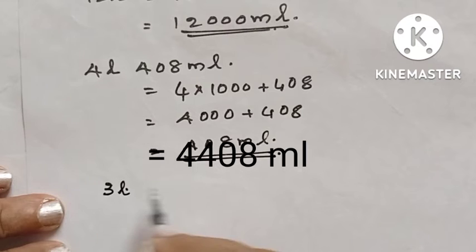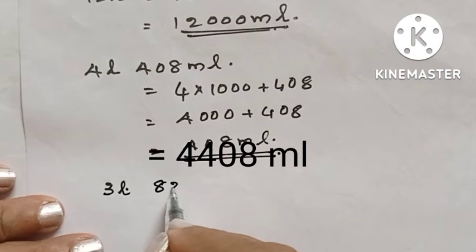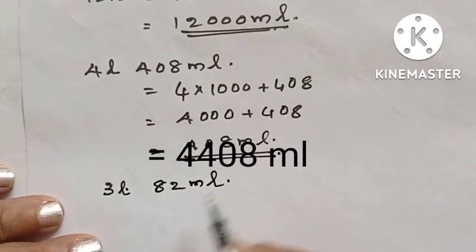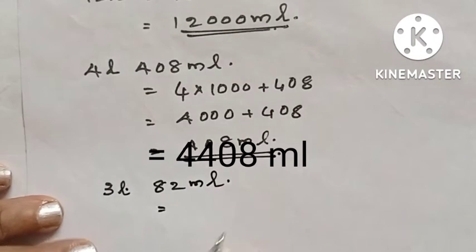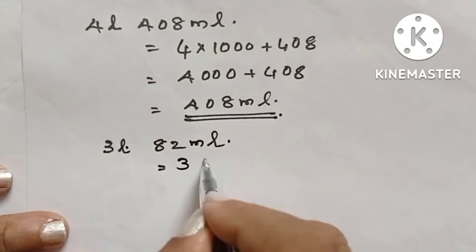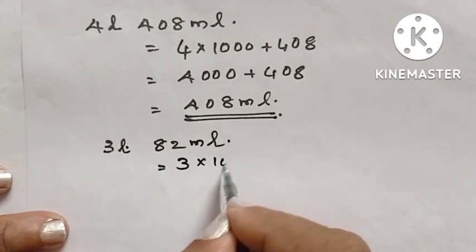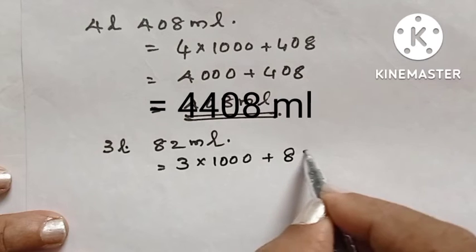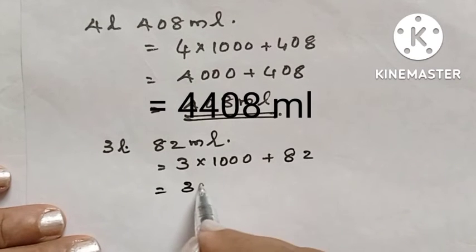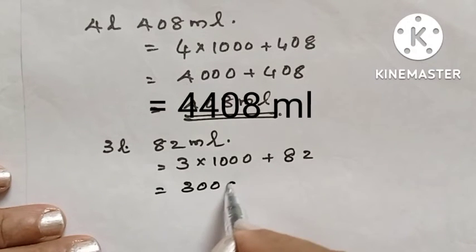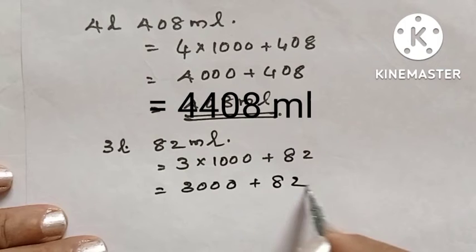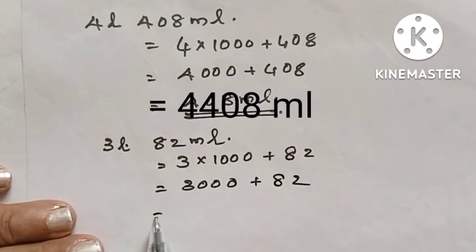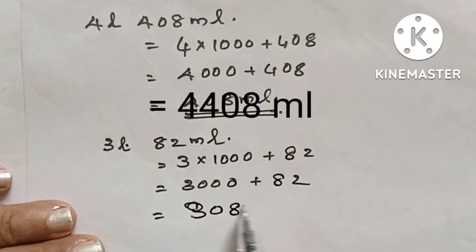The next question is three liters and eighty-two milliliters. Three liters equals three thousand milliliters. Three thousand plus eighty-two equals three thousand and eighty-two milliliters.